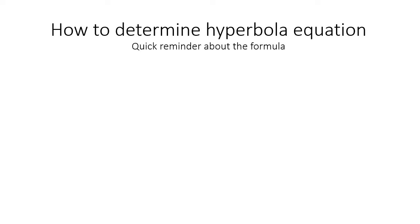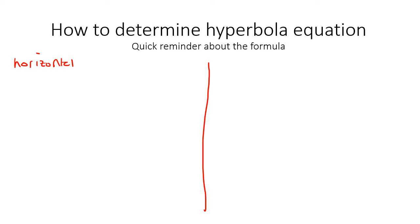In the previous lesson, we learned how to draw hyperbolas. In this lesson, we're going to learn how to find the equation when they give us certain information. So just remember, we get two main types of hyperbolas: we get a horizontal, and we get a vertical.